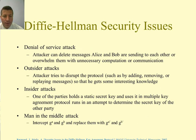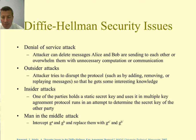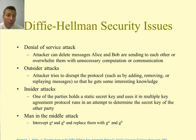There are a few security issues with the Diffie-Hellman algorithm. Denial of service attacks: an attacker can delete messages that Alice and Bob are sending to each other, or overwhelm them with unnecessary computation or communication — sending a whole bunch of messages so a computer becomes overwhelmed receiving far too many messages.